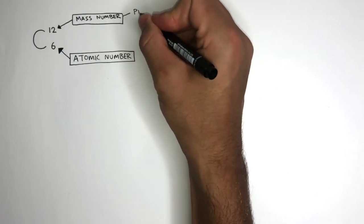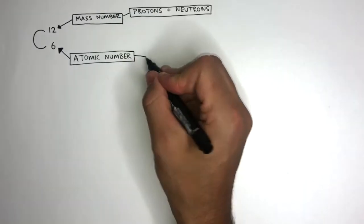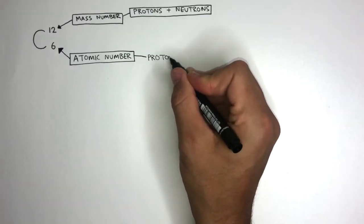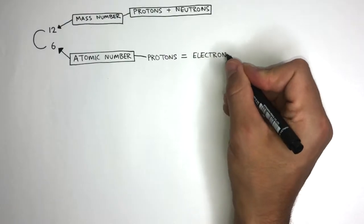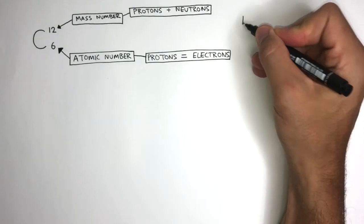The mass number is made up of protons and neutrons, whereas the atomic number is the number of protons also equal to the number of electrons. To help understand what these numbers mean...